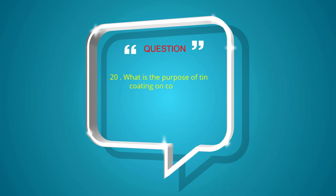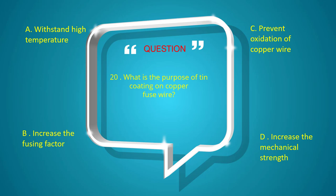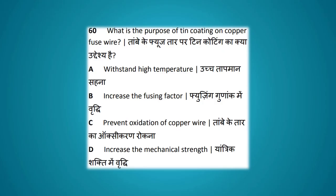What is the purpose of tin coating on copper fuse wire? Options: withstand high rupture, withstand high temperature, increase the fusing factor, prevent oxidation of copper wire, increase the mechanical strength. The answer is prevent oxidation of copper wire.